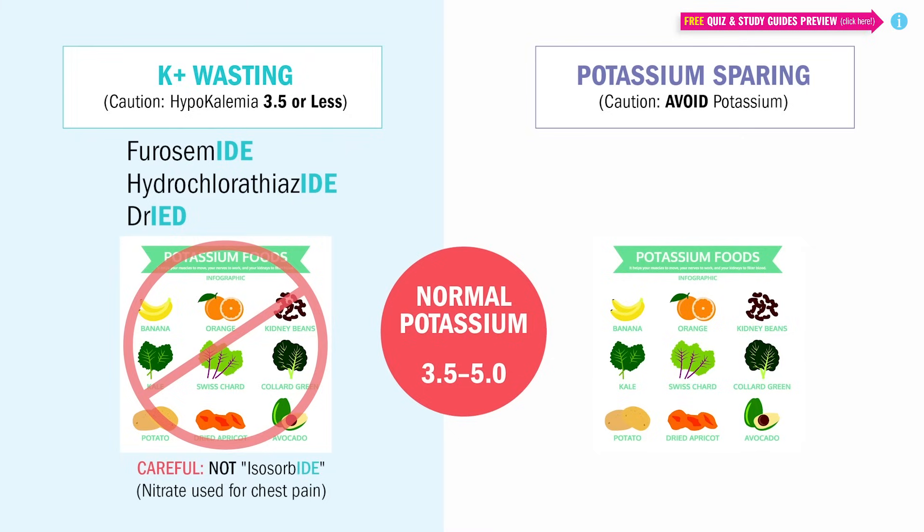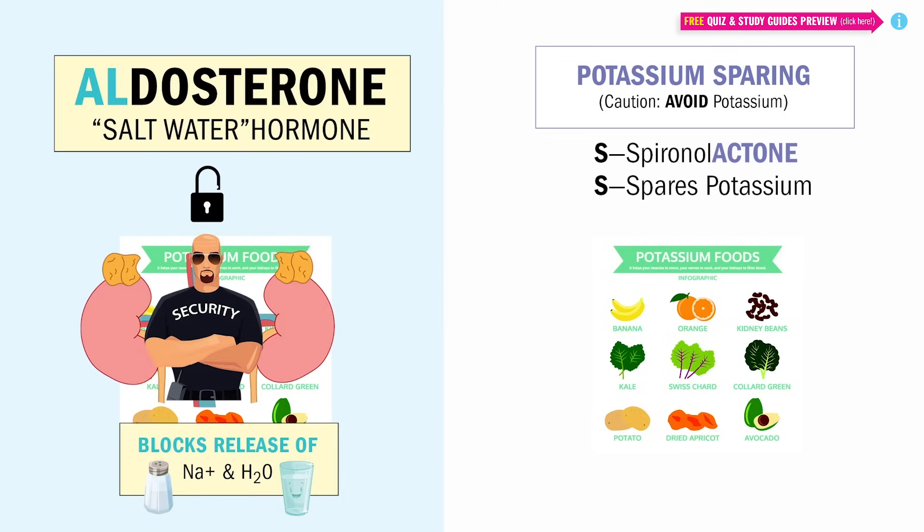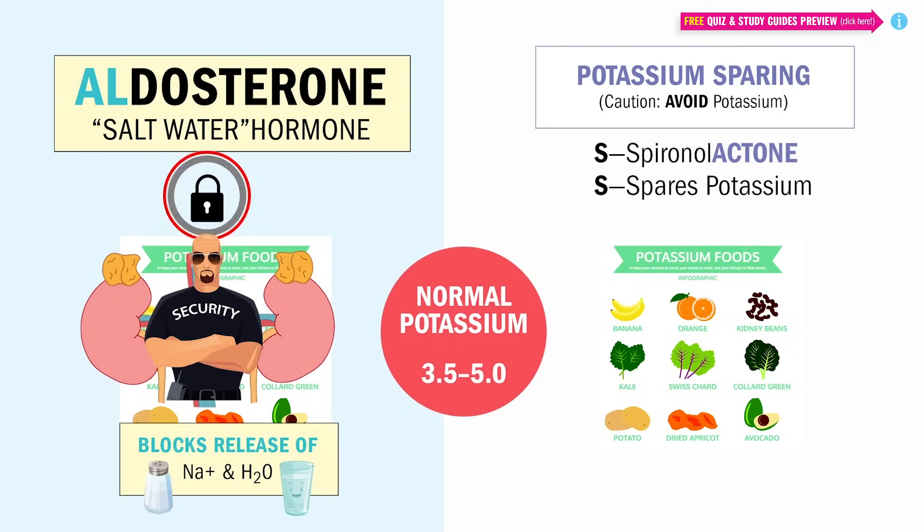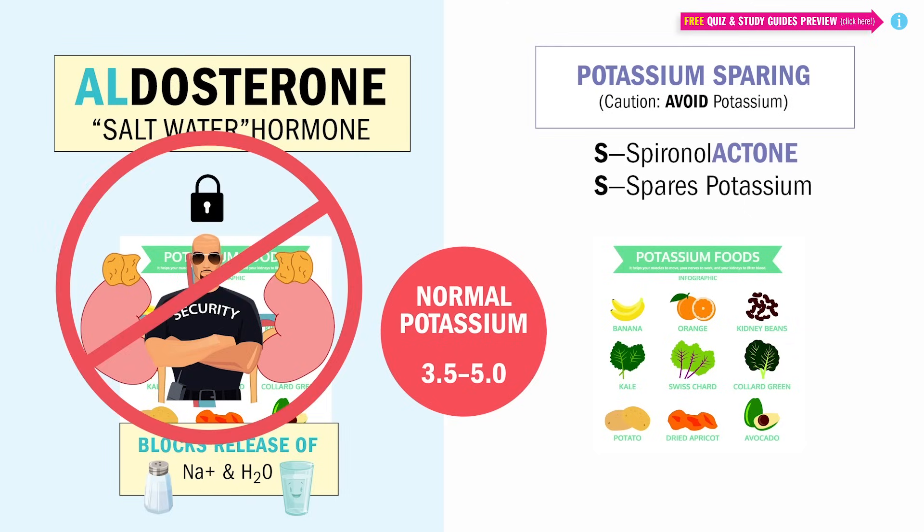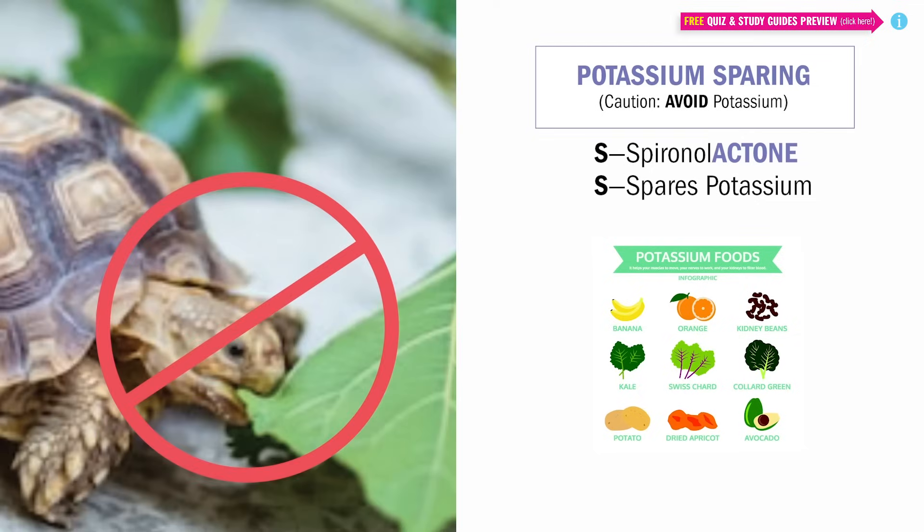Potassium sparing diuretics. S for spironolactone. Think S for spares the potassium. This blocks aldosterone directly to let fluid out of the body and into the potty. And it ends in -tone. So think it blocks aldosterone. Spironolactone retains potassium. So avoid potassium-rich foods like green leafy veggies, fruits, and even salt substitutes. Big test tip right there.